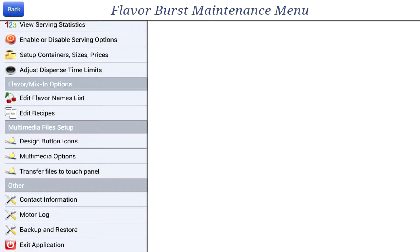You have the capability of transferring your own multimedia files to the color touch panel with a USB drive. This feature is great for adding your own pictures, backgrounds, videos, or button graphics to the touch panel. This tutorial will explain the different file types and walk you through the process of transferring your own files to the touch panel.